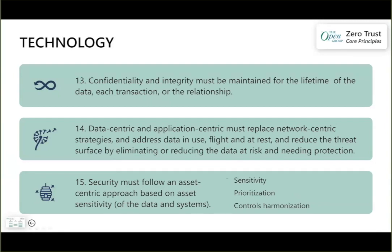Data-centric and app-centric must replace network-centric. Network is necessary but not sufficient. You want firewalls in place, but you cannot make the network paradigm so dominant that it interrupts business functionality. Data is the intellectual property, and applications are extremely valuable — when they go down, the business loses money. These are the technical instantiations of business value, so that must be the center of your thinking. We need to look at the entire lifecycle, data in flight and at rest, and reduce threat surface by reducing data risk.